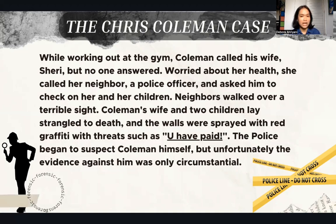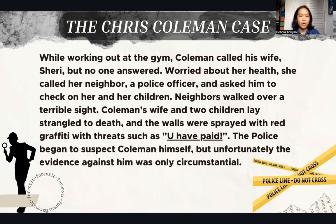While working out at the gym, Coleman called his wife Sherry, but no one answered. Worried about her, he called her neighbor, a police officer, and asked him to check on her and her children. The neighbor walked over to a terrible sight. Coleman's wife and two children lay strangled to death, and the walls were sprayed with red graffiti with threats such as 'you have faith.' The police began to suspect Coleman himself, but unfortunately the evidence against him was only circumstantial.